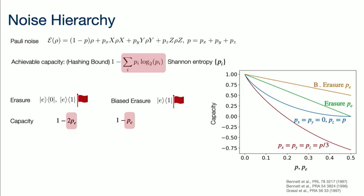For the same amount of error — the same rate P or PE — the biased erasure channel has the highest capacity, then the erasure channel, then the Pauli channel, and then the depolarizing channel. So even if you give me one number, the infidelity of the channel, that's not sufficient, because that infidelity would put all these channels as equally good or equally bad. But if you think about the capacity, then clearly we have one winner.